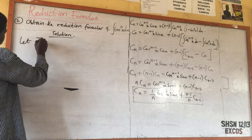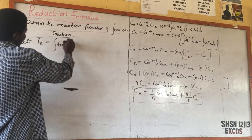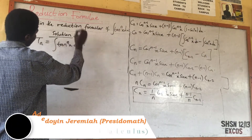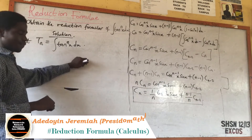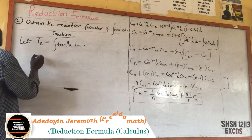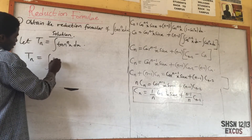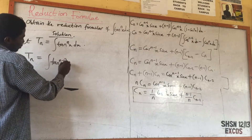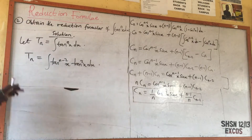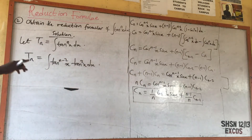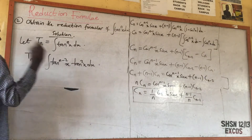Let T_n denote the integral of tan^n(x). We want to obtain the reduction formula for tan^n(x), so T_n equals the integral of tan^(n-2)(x) multiplied by tan²(x) dx.